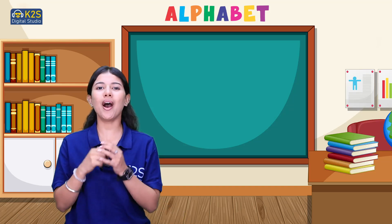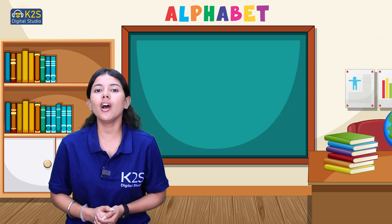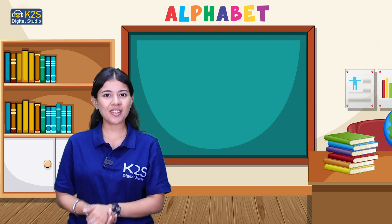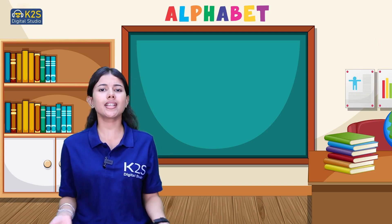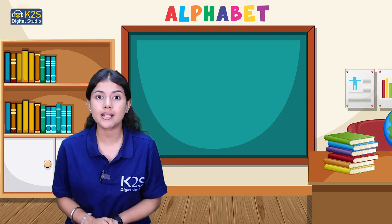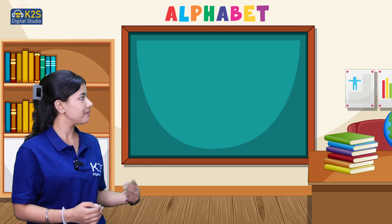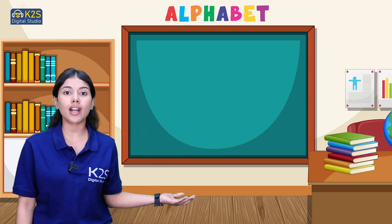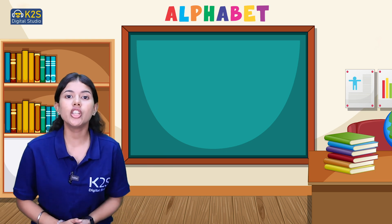Hey champs, how are you all? You all are doing great, right? So here we are with the next letter of our alphabet series. The seventh letter of our alphabet series is G.